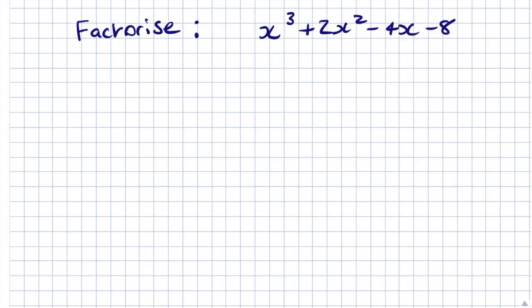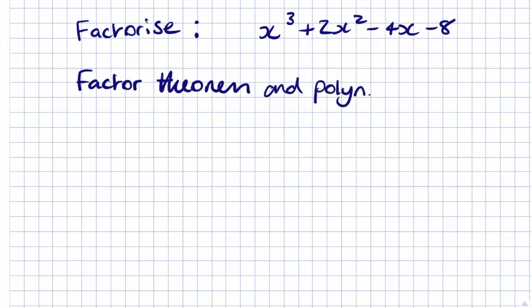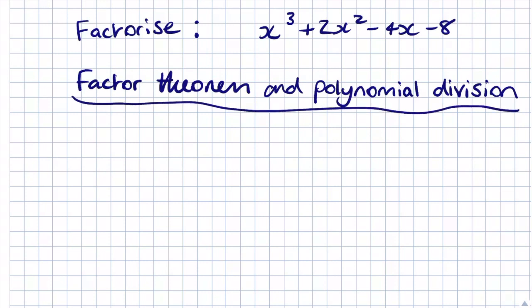Now we can factorise this equation using the factor theorem and polynomial division. Drawing a table of x values and f(x) values, we test different x values until f(x) equals 0 — in other words, the points at which the curve crosses the x-axis when y = 0.